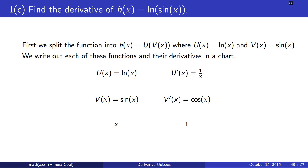Problem C. We set up the same table that we did before. We notice that our outside function is the natural log, our inside function is sine. The derivatives of these are 1 over x and cosine, respectively. We fill out this table.